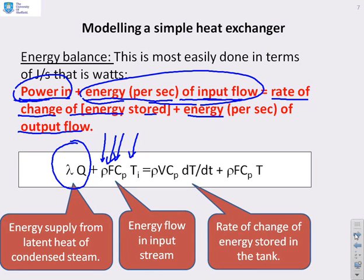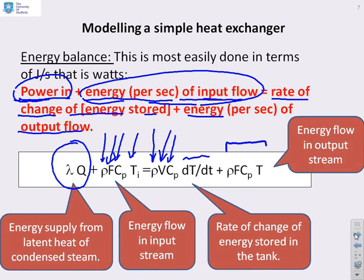What's the rate of change of energy stored in the tank? We need the volume of the tank, which tells us how much liquid is in the tank, plus the density — so rho times V is the mass of liquid in the tank. Again, we've got the specific heat, and then we've got the rate of change of temperature of the liquid in the tank. So the rate of change of energy stored is rho V C_p times dT/dt. Finally, we've got the energy flow in the output stream, which matches the term from the input stream apart from having T instead of T_i. So there is our energy balance equation.